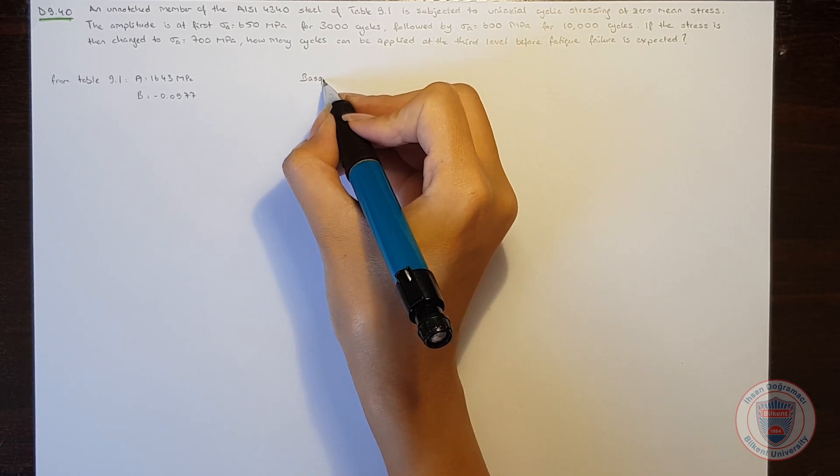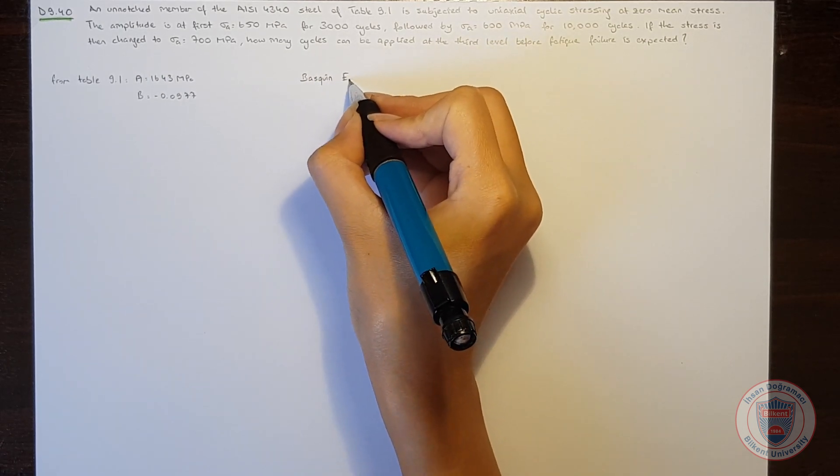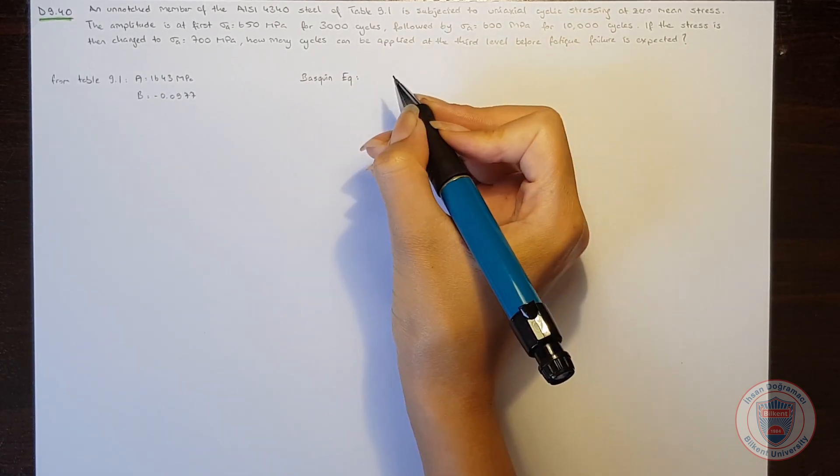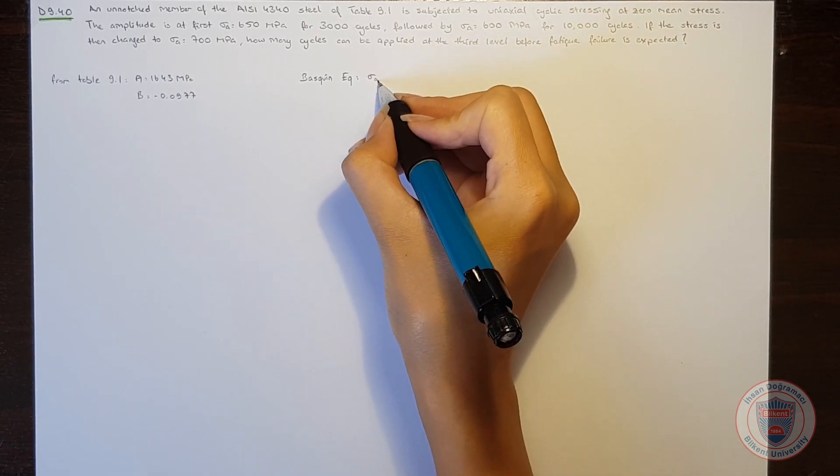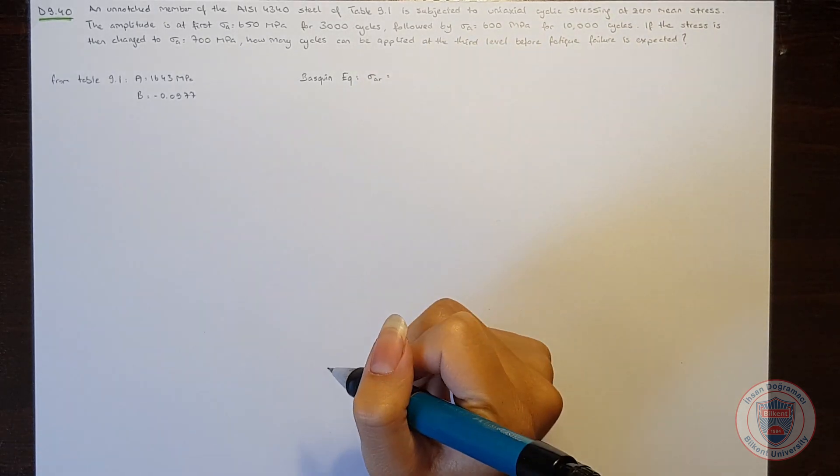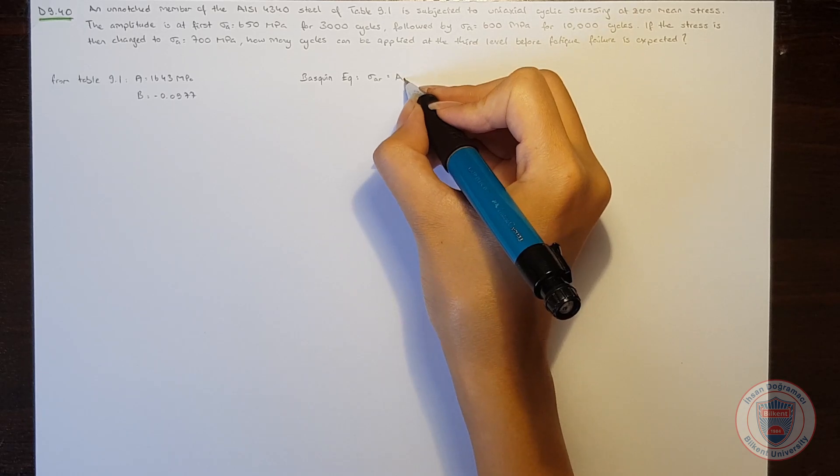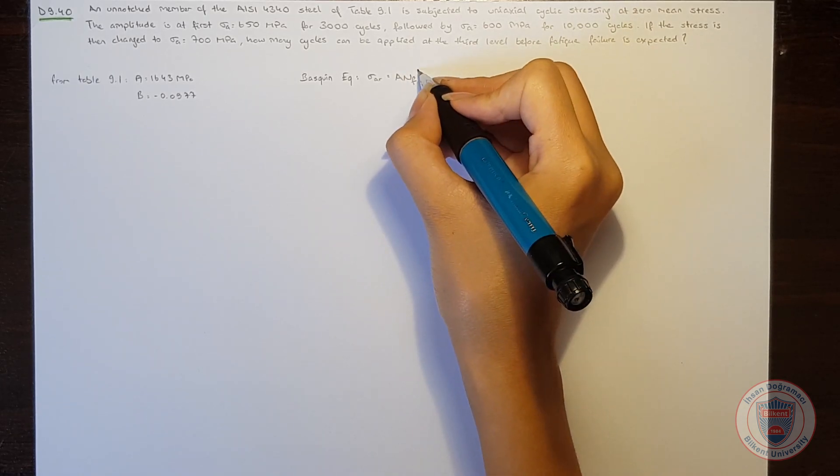To solve the question, we will use the Baskin equation. According to the Baskin equation, we know that sigma_a equals A times nf to the power of b.